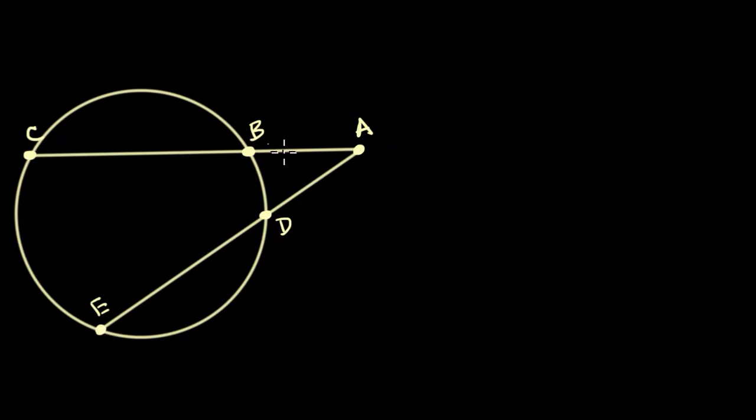So what do I have going on here? I have two secants that intersect at a point outside of the circle. And what I want to do in this video is come up with a relationship between the angle measure where those two secants intersect outside of the circle. Maybe we call that measure X right over here.